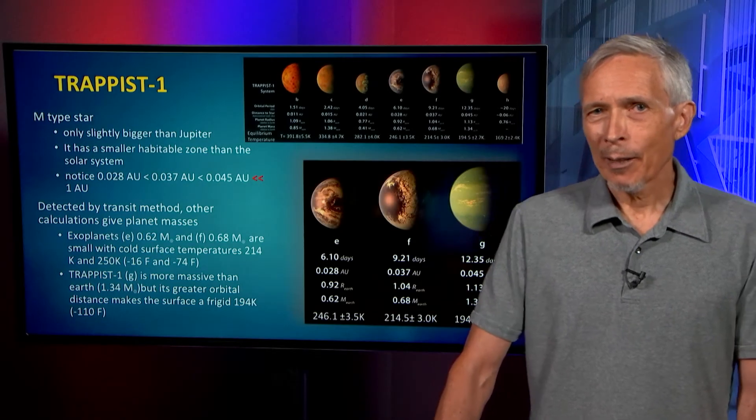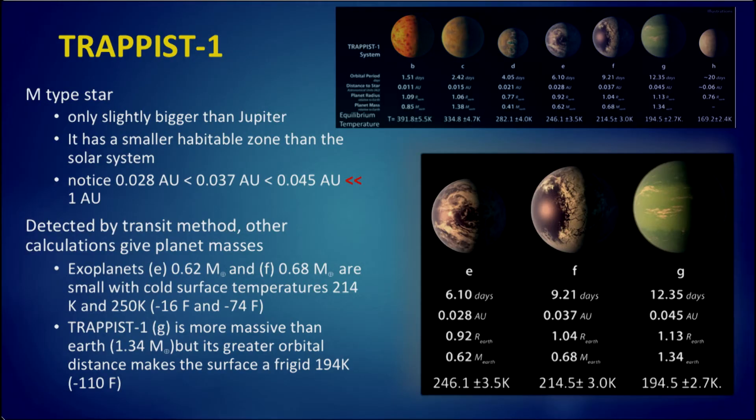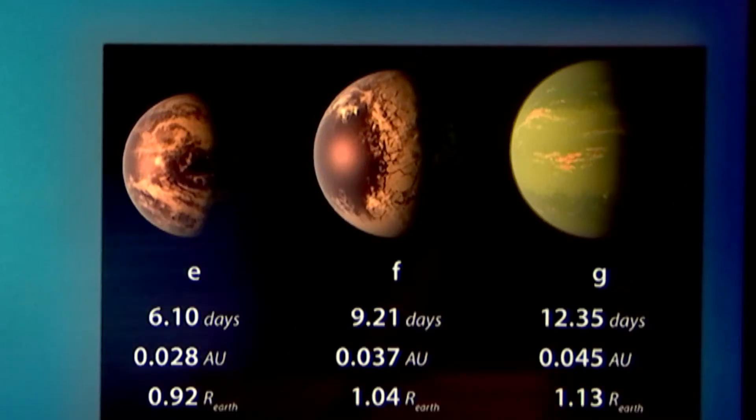More plausible and more exciting for the true prospect of biology is the TRAPPIST-1 system. This is an M-type star, so it's the most abundant type of star in the universe. The TRAPPIST system is very fascinating because it's indicative of a huge population of stars whose planet properties we've only just started to measure. An M-type star is not that much larger than Jupiter, so it has a much smaller habitable zone than the full extent of the solar system. This system was detected by the transit method, but other calculations give the planet mass. Two of the exoplanets, E and F, are fairly small, about two-thirds of an Earth mass, and have cold surface temperatures based on the properties of their parent star, temperatures well below the freezing point of water.